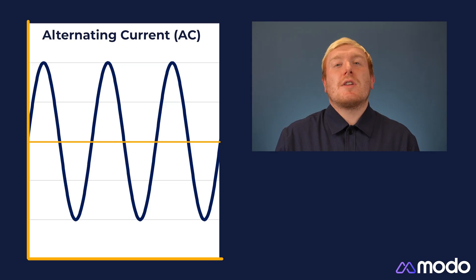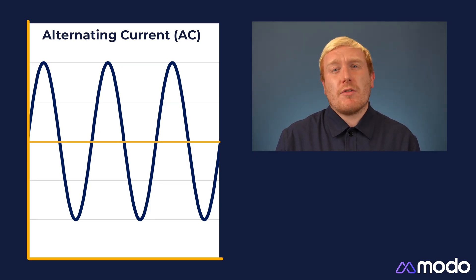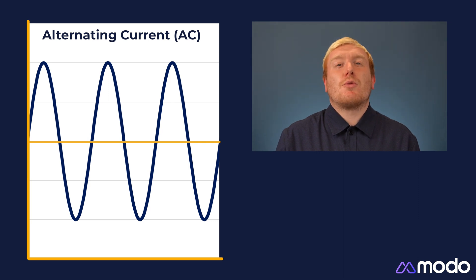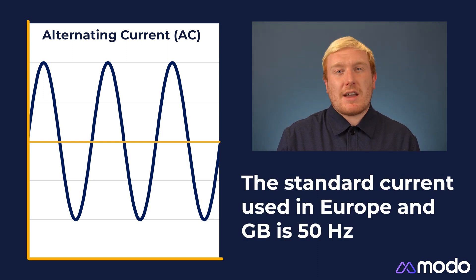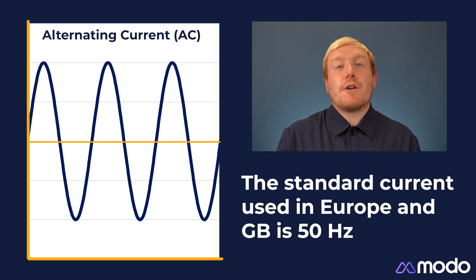To start off, here's a quick reminder of how frequency itself works. Alternating current, or AC, is a type of electrical current in which the direction of the flow of electrons switches back and forth at regular intervals. The standard current used in Europe and Great Britain is 50 cycles per second, which means a frequency of 50 hertz.